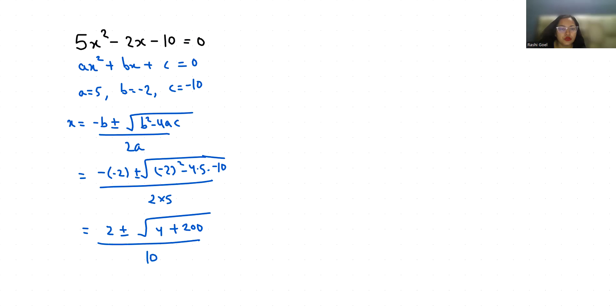So x equals (2 ± √204) / 10. We can simplify √204 as 2√51.